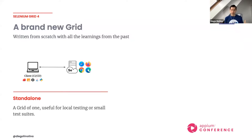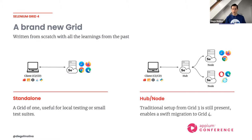Grid 4 is a brand new grid, written from scratch. One big plus is that we know how it should work based on everything we've learned from the past. We still support standalone mode — you can run it just like Grid 3, the command changes a bit but the environment is the same. We also still support hub-and-node mode, which works very similarly to before — internally there are differences, but for users running tests against the grid it's exactly the same.